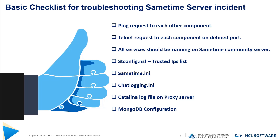Next we should check the Catalina log file on the proxy server to verify whether the proxy server is properly connected to the community server. And lastly, we should check the MongoDB configuration file to ensure the correct host name is mentioned in the config file.